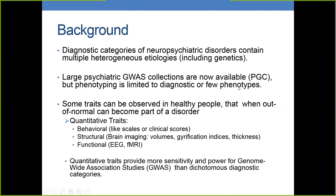As we know, these phenotypes are very complex. Some traits can be observed in healthy people, and when they are very high or very low, can become part of a disorder. So quantitative traits like behavioral traits can be measured with scales or clinical scores.